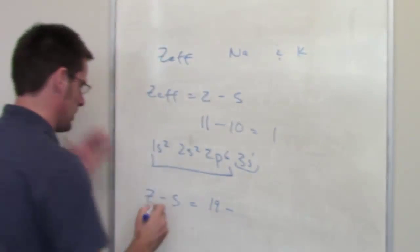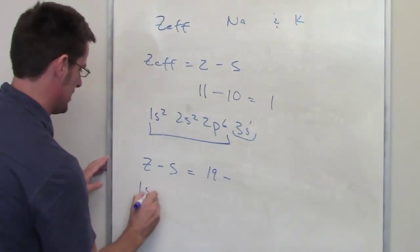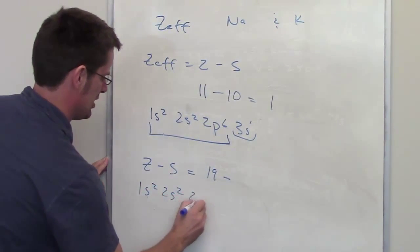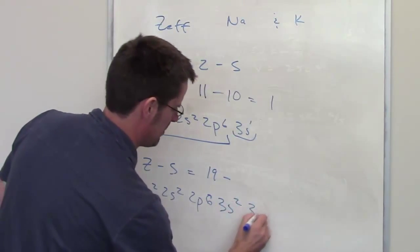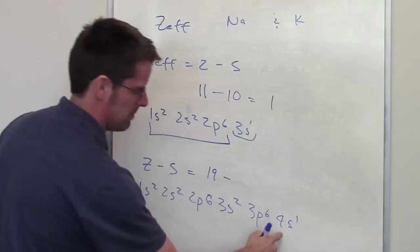To determine what S is, we have to once again draw its electron configuration. It's 1s2, 2s2, 2p6, 3s2, 3p6, 4s1, I believe.